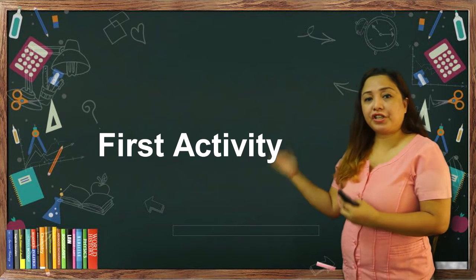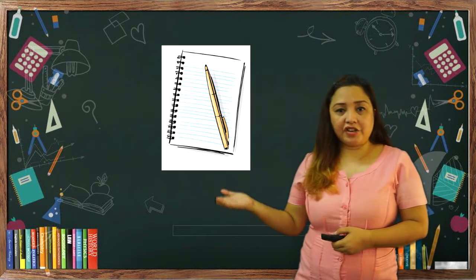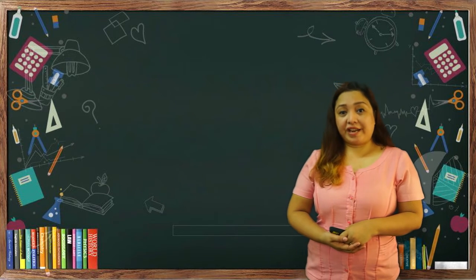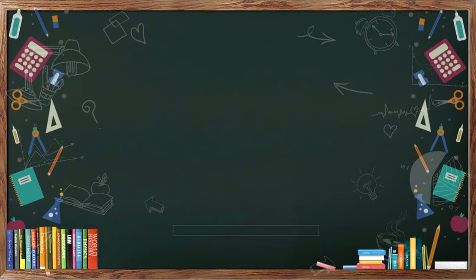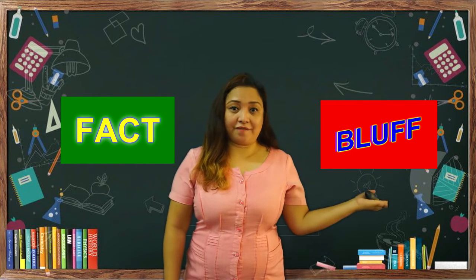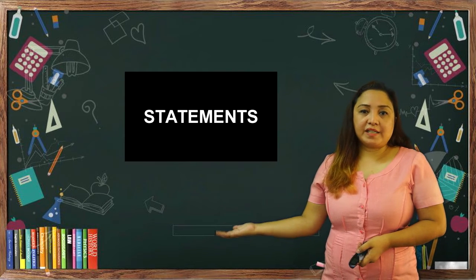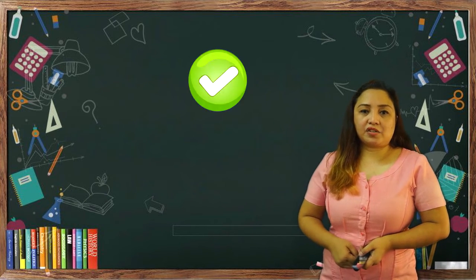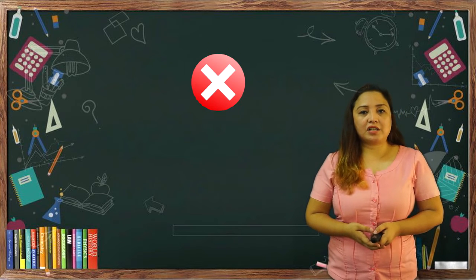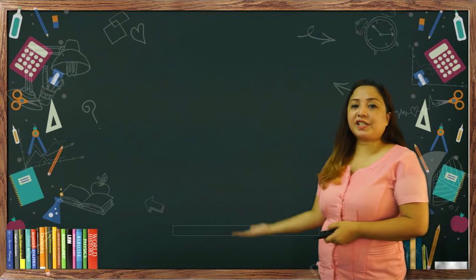So to start with, let us have our first activity. You are going to prepare a pen and your notebook to write down your answers. Are you ready? Let us play Facts or Bluff. I will show you some statements. If you think that the statement is correct, you write 'facts.' And if you think that the statement is false, you write 'bluff.'